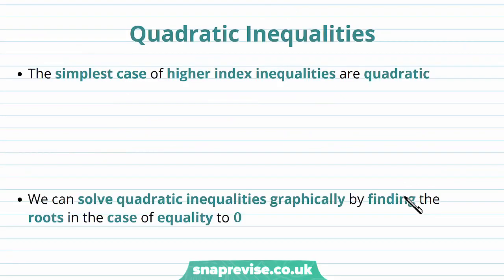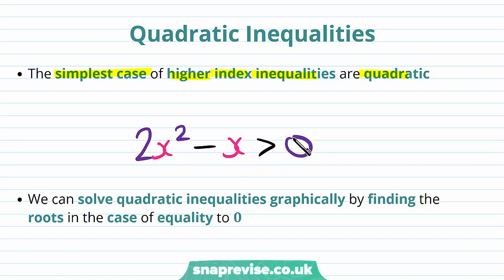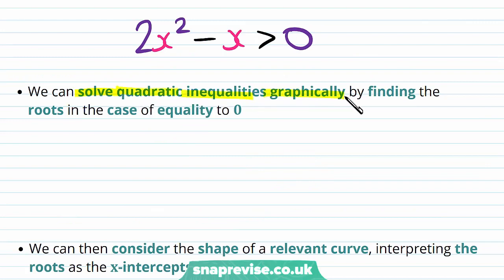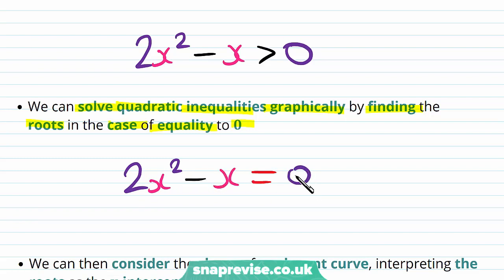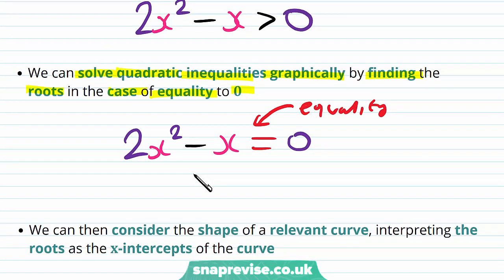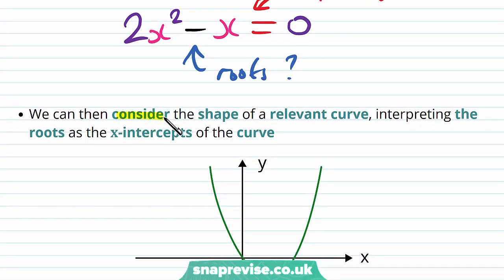So firstly, how can we solve quadratic inequalities? The simplest case of higher index inequalities are quadratic. For example, consider the inequality 2x² - x > 0. We can solve quadratic inequalities graphically by finding the roots in the case of equality to 0. So what we can do is take our inequality left-hand side, 2x² - x, and set it equal to 0, i.e. examine the equality case.